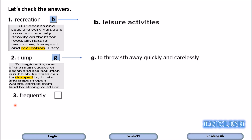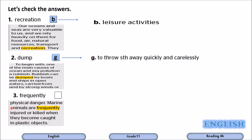Word number three: frequently. The sentence reads: 'Marine animals are frequently injured or killed when they become caught in plastic objects.' When marine animals are caught in plastic objects, they are killed or injured frequently, which means very often. It goes with D.